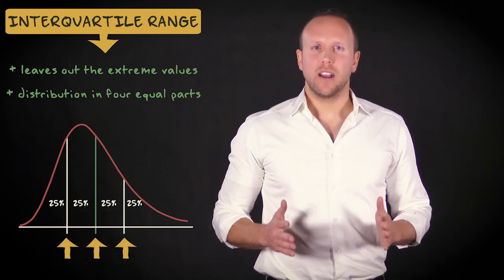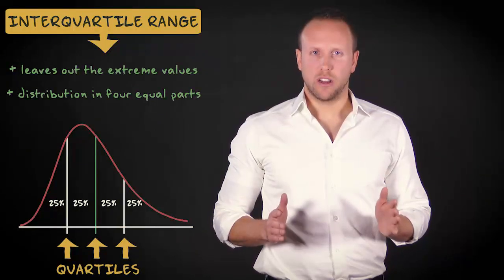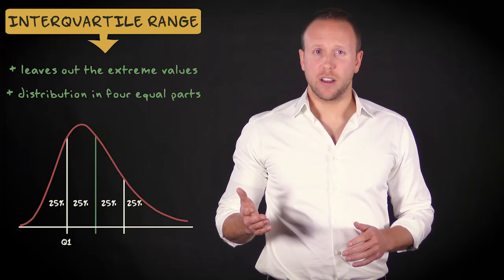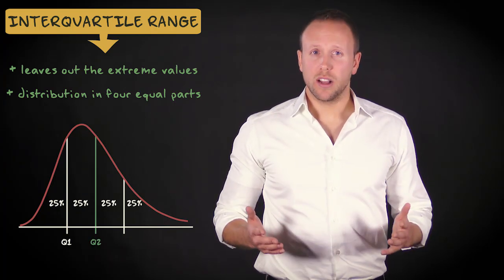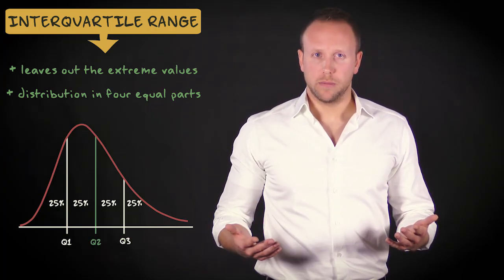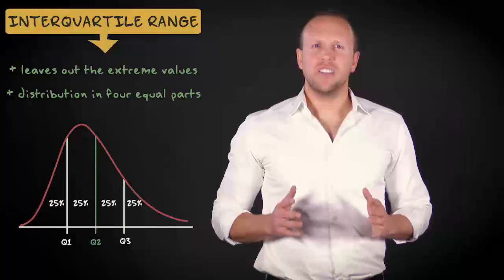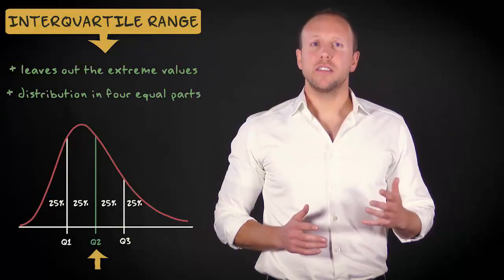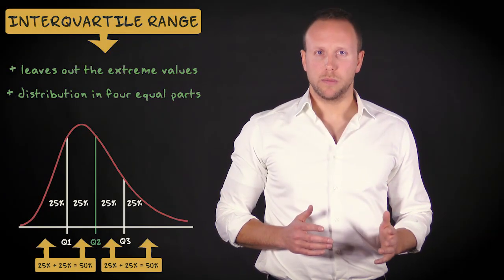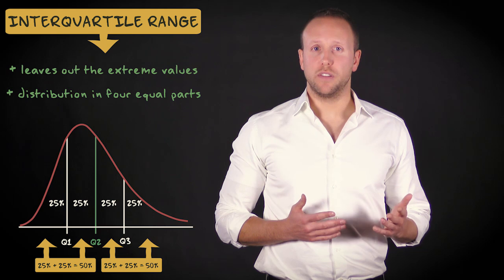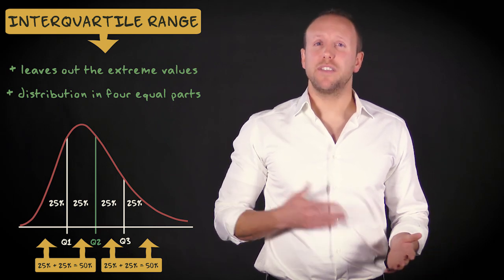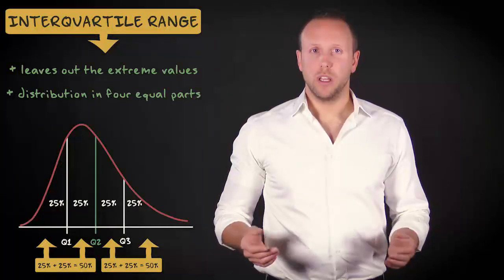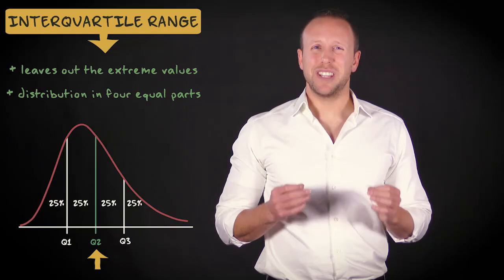The values that now divide the distribution are called quartiles. This is the first quartile, this is the second quartile, and this is the third quartile. As you can see, the second quartile divides the distribution in two equal parts. After all, 50% of the values is below this value, and 50% lies above the value. Q2 is therefore the same as the median.